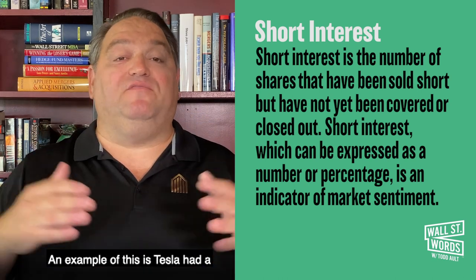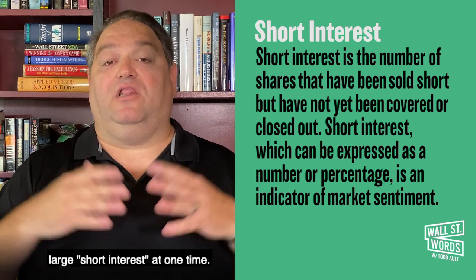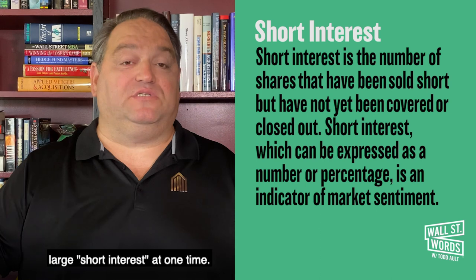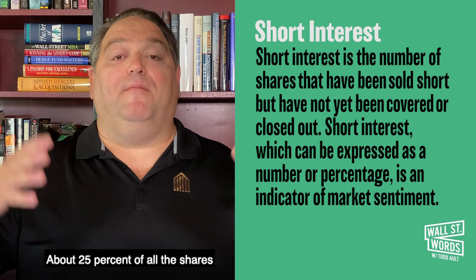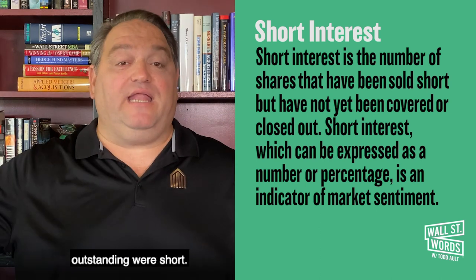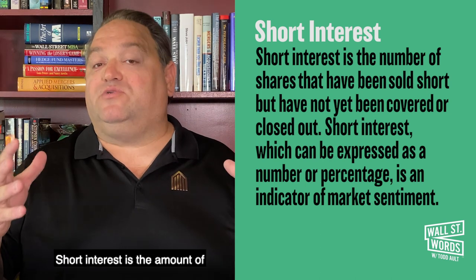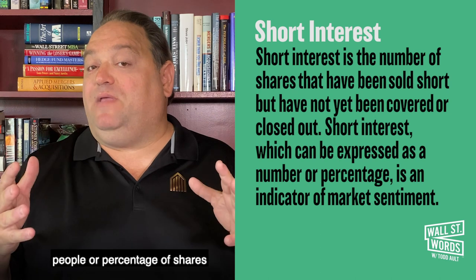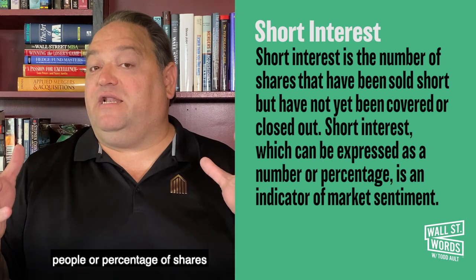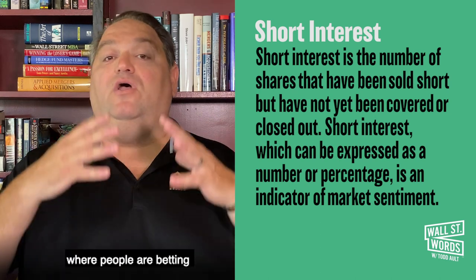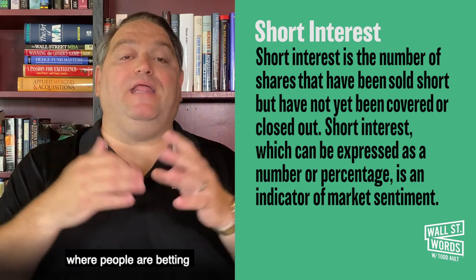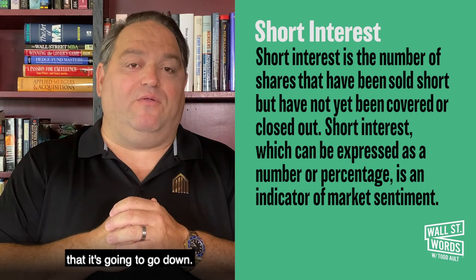An example of this is Tesla had a large short interest at one time — about 25 percent of all the shares outstanding were short. Short interest is the amount of people, or percentage of shares, where people are betting that it's going to go down.